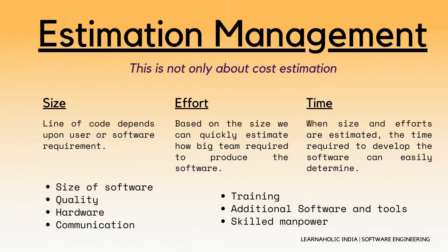The third activity is Estimation Management. This is not only about cost estimation — whenever we start to develop the software we also figure out the size, that is nothing but lines of code, efforts, time, as well as cost. If we talk about size, the lines of code depend upon the user or software requirement. If we talk about efforts, we should know the size of the software because based on the size we can quickly estimate how big a team is required to produce the software.